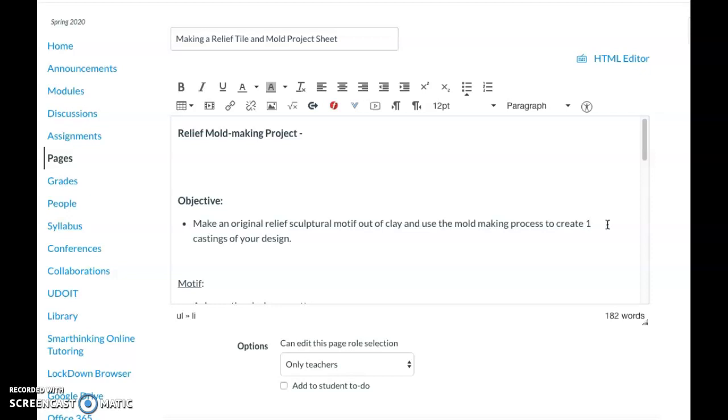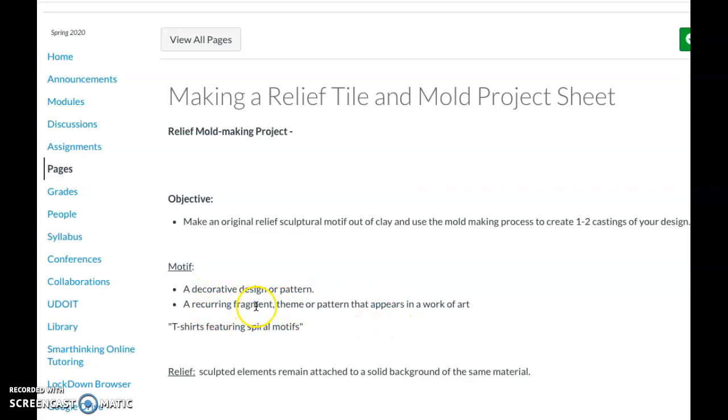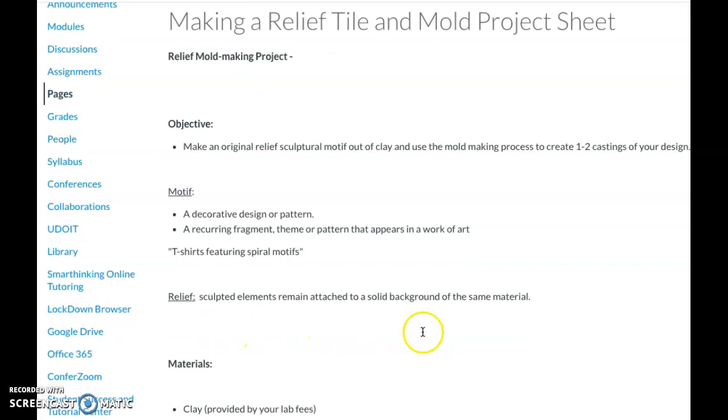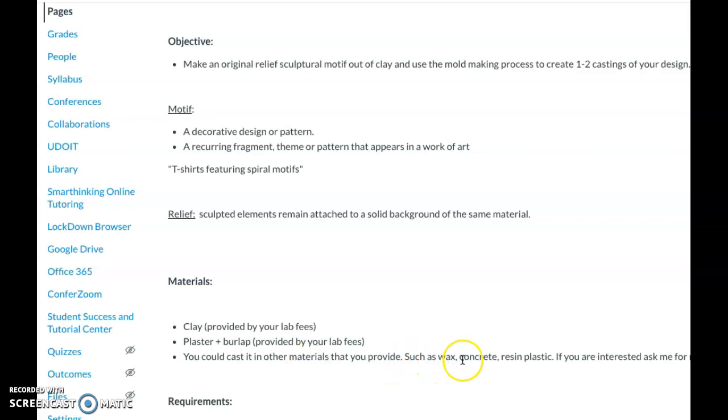You have to incorporate a motif, which is a pattern that reoccurs. We're going to look at examples in the slideshow. Relief means attached to the solid background of the same material. I gave you plaster and burlap, and you could cast other materials if you wanted into this later on, like wax, concrete, resin, or plastic.